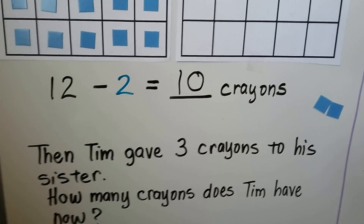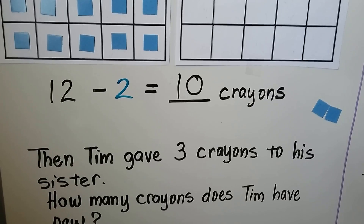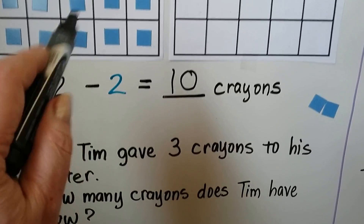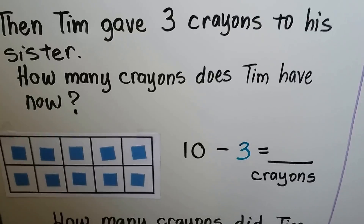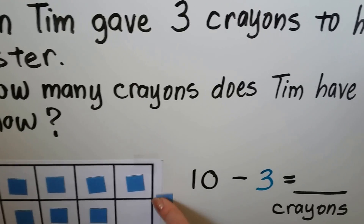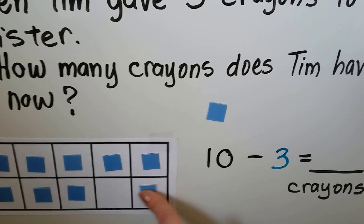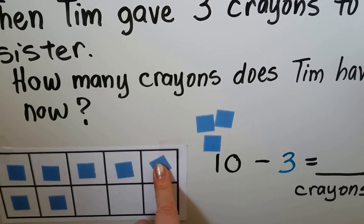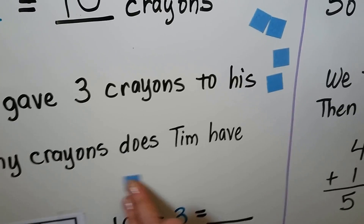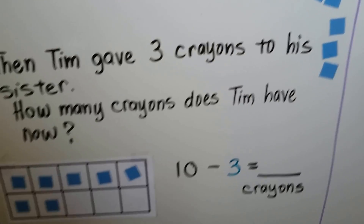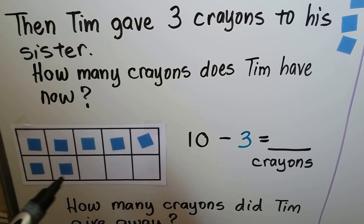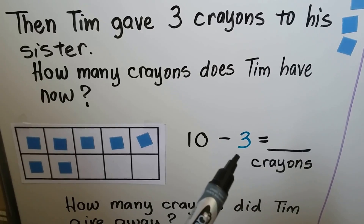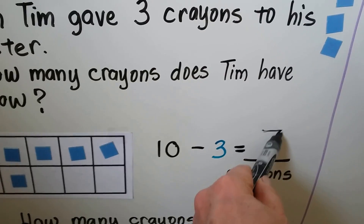Then Tim gave 3 crayons to his sister. How many crayons does Tim have now? So we had 10 left. He gave 3 crayons to his sister, so let's take away 3 from the 10. We'll take away 1, 2, 3, and put them with the other counters we took away. How many crayons does he have now? 1, 2, 3, 4, 5, 6, 7. 10 minus 3 is equal to 7. Now he has 7 crayons.